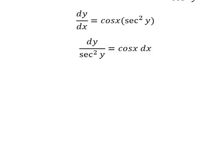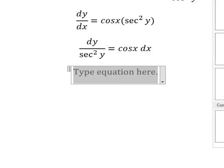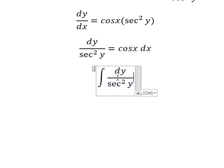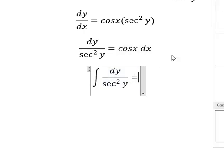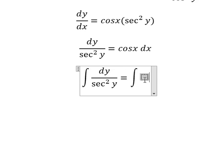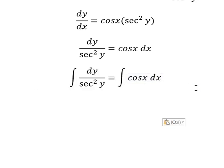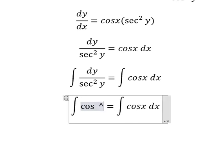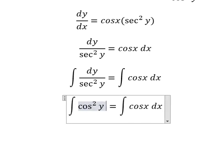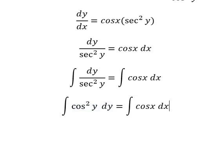Next, we need to integrate both sides. This one we have cosecant of y squared dy, and now we have the formula in here.